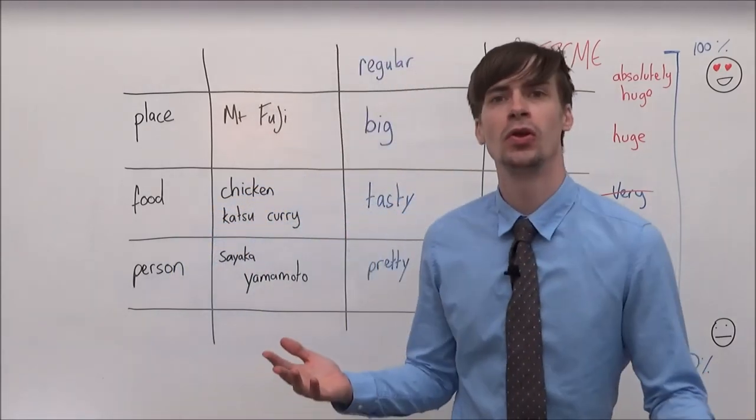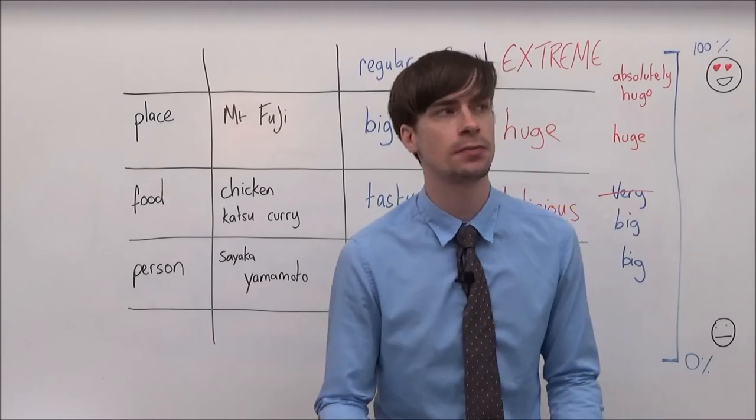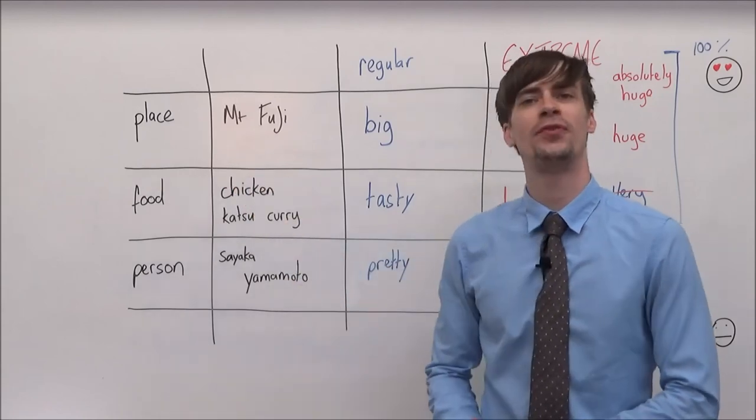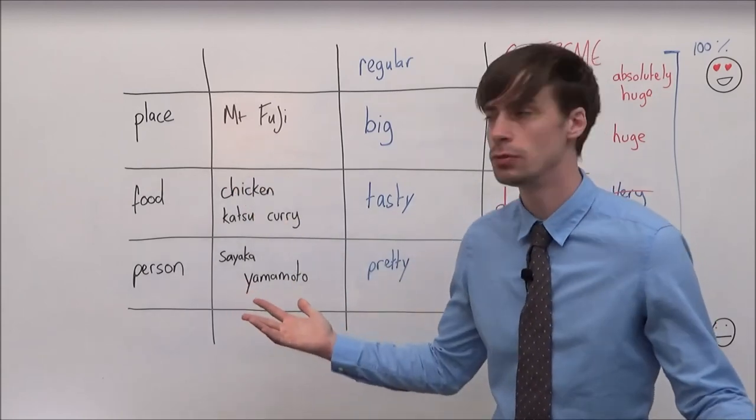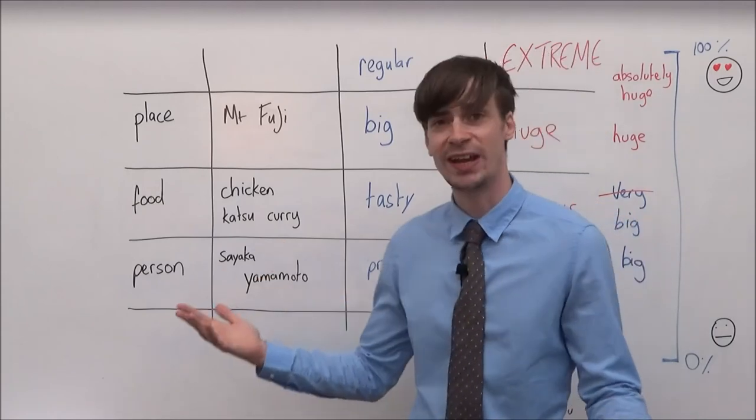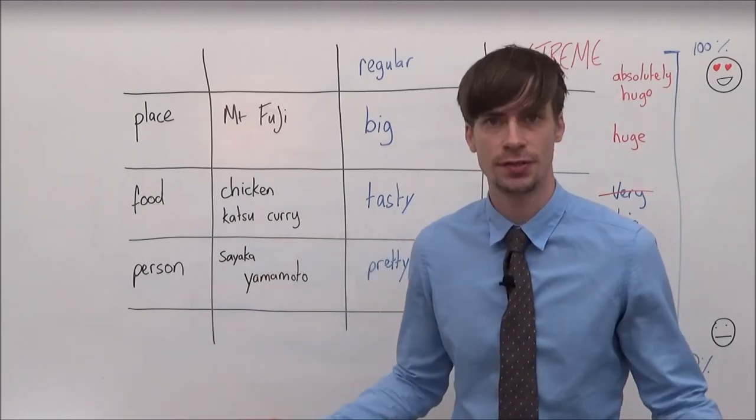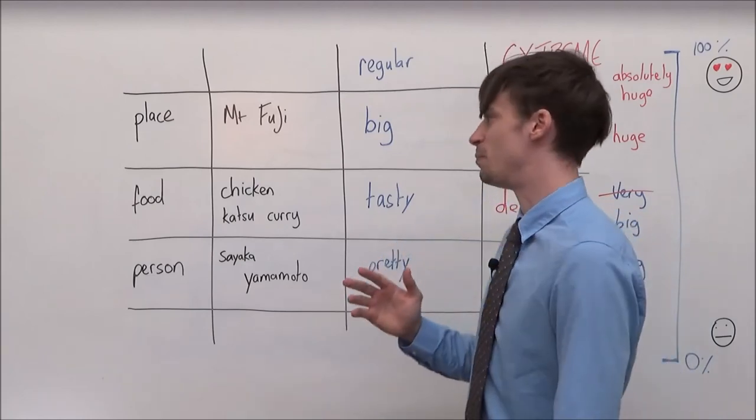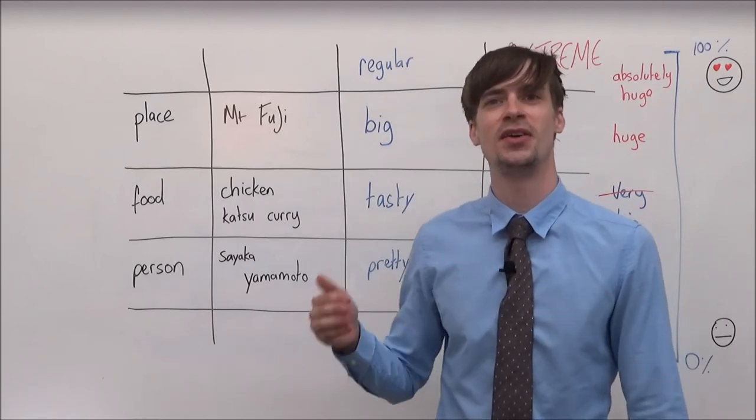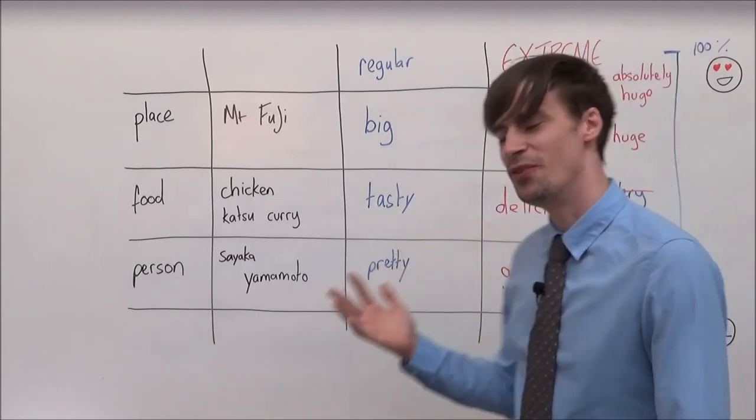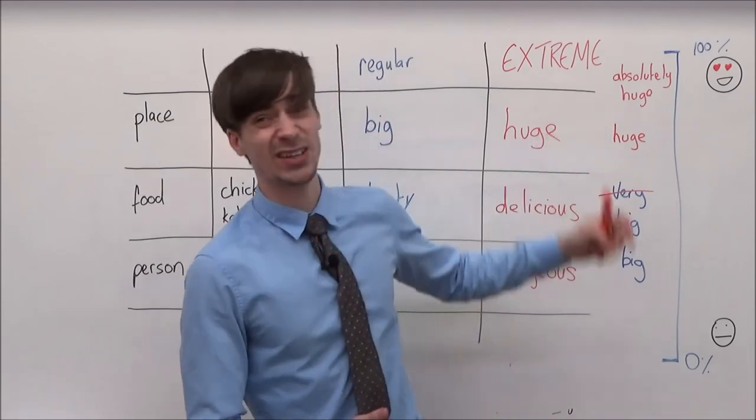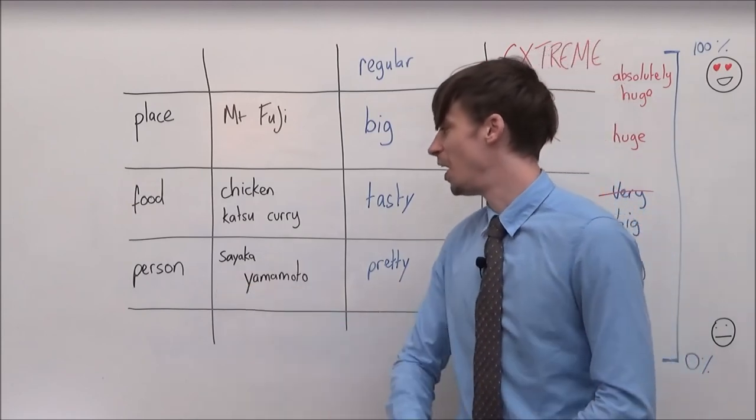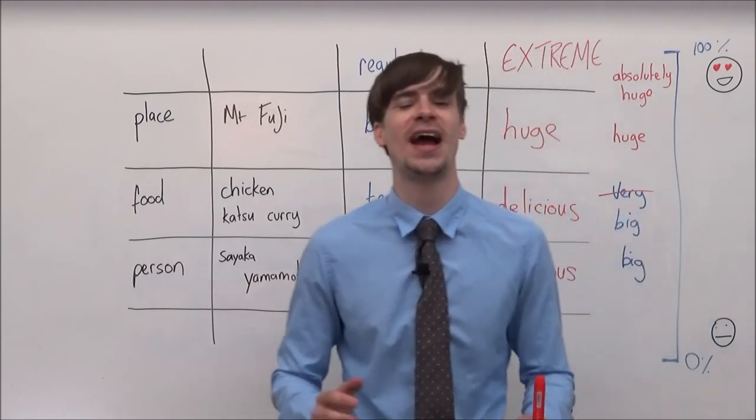So when you're talking about your favorite things, you could have a sentence like I like Mount Fuji because it's absolutely huge. I like chicken katsu curry because it's absolutely delicious. And again, a big mistake that I hear all the time is people saying I like this because it's very delicious. We wouldn't use very with an extreme adjective, that's a mistake. And of course, I like Sayaka because she's absolutely gorgeous.